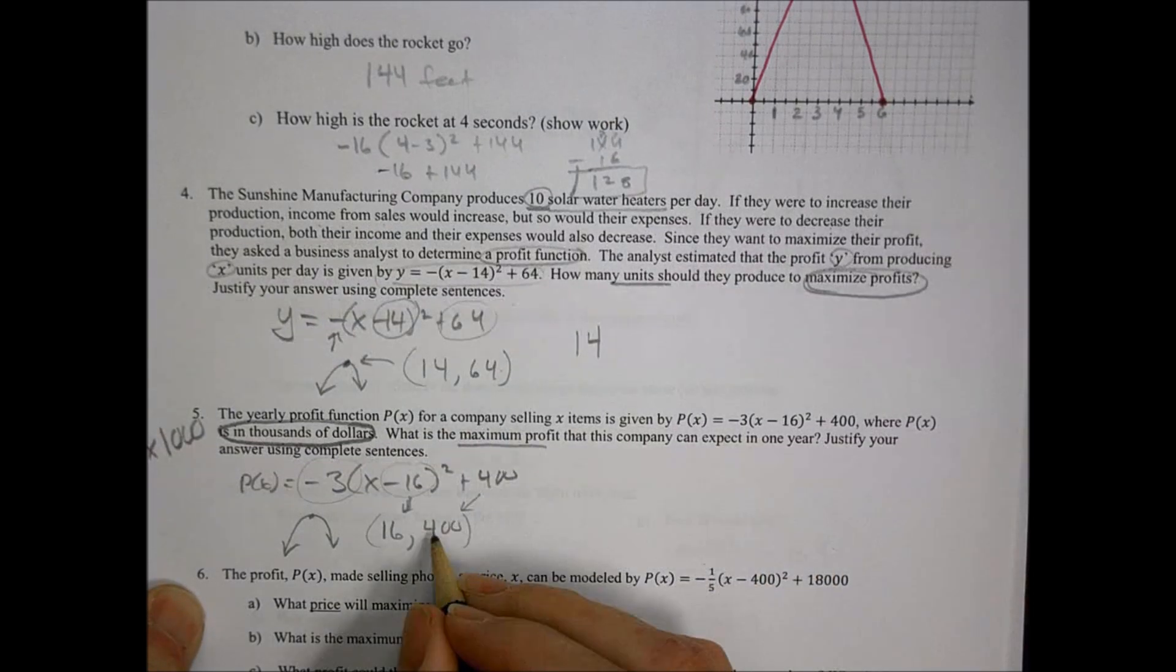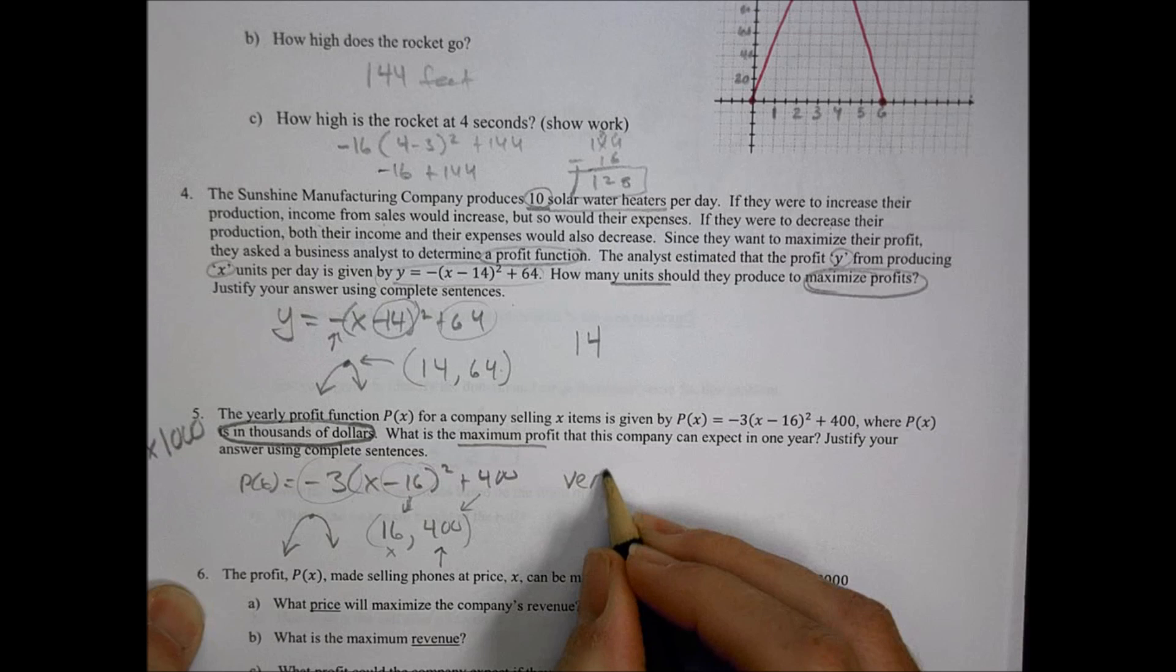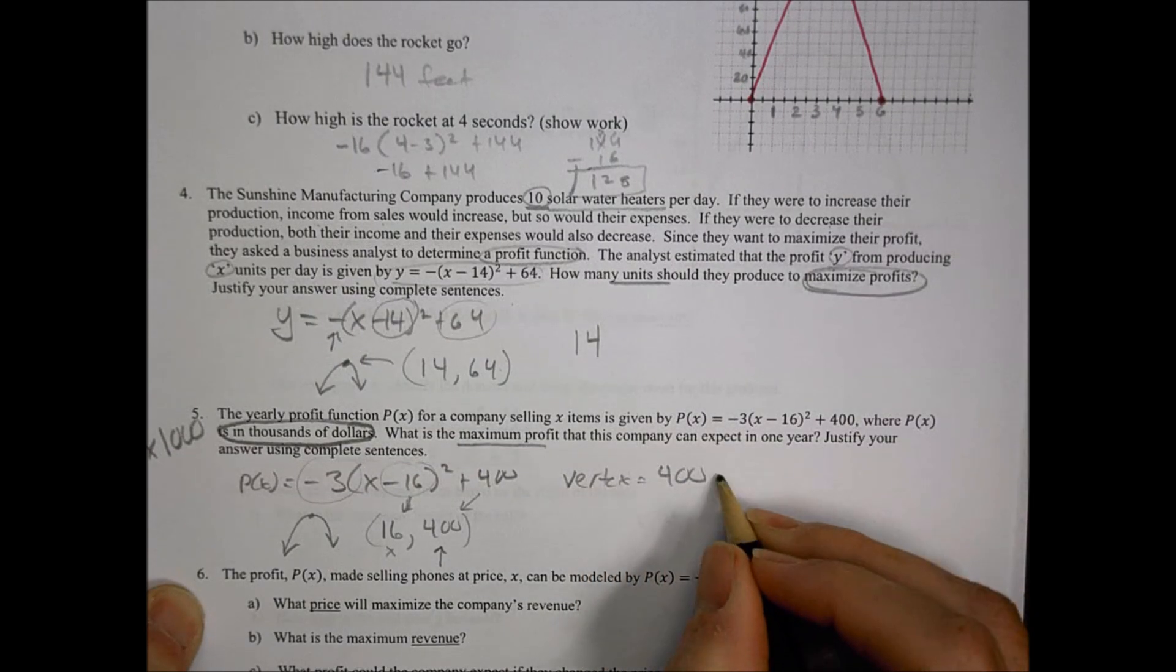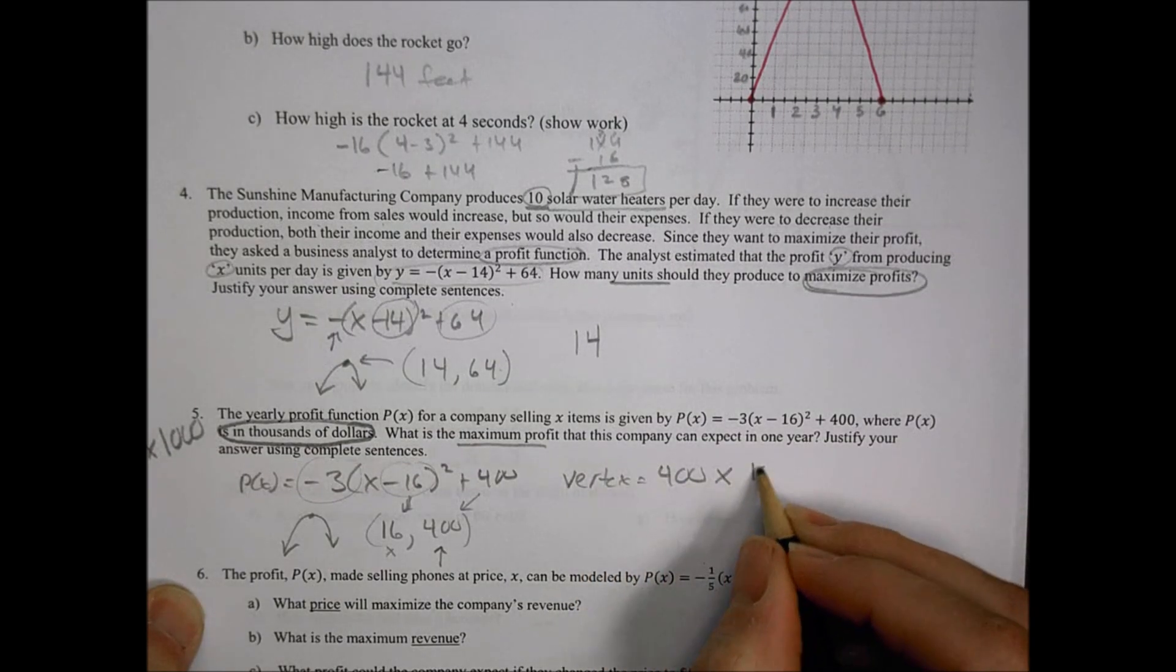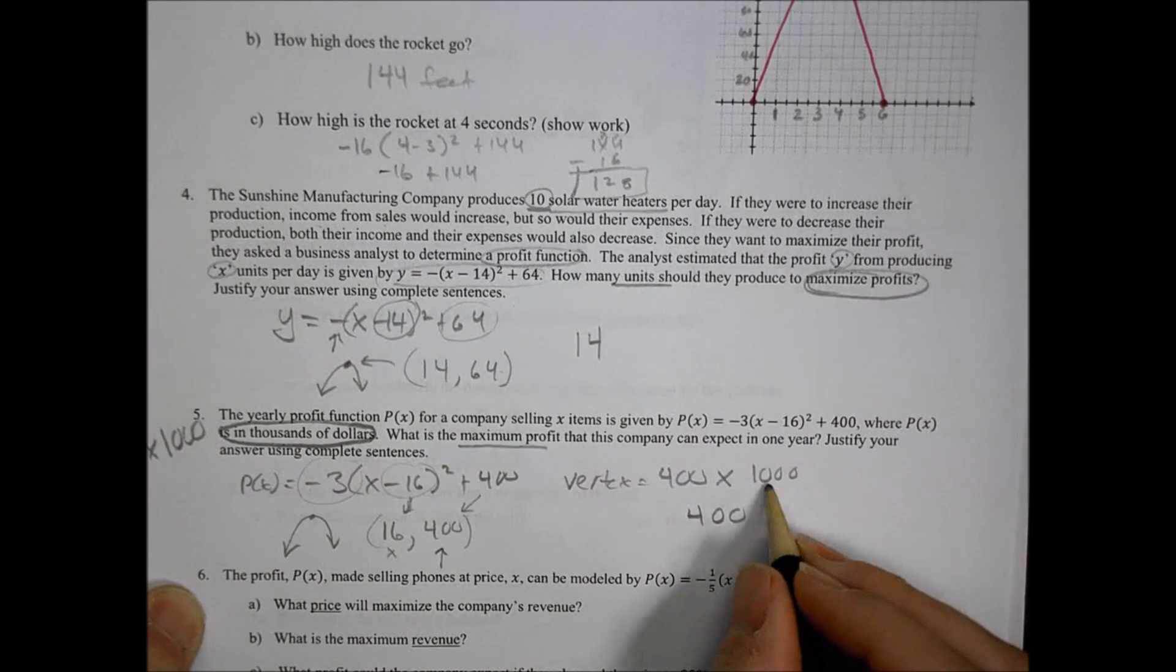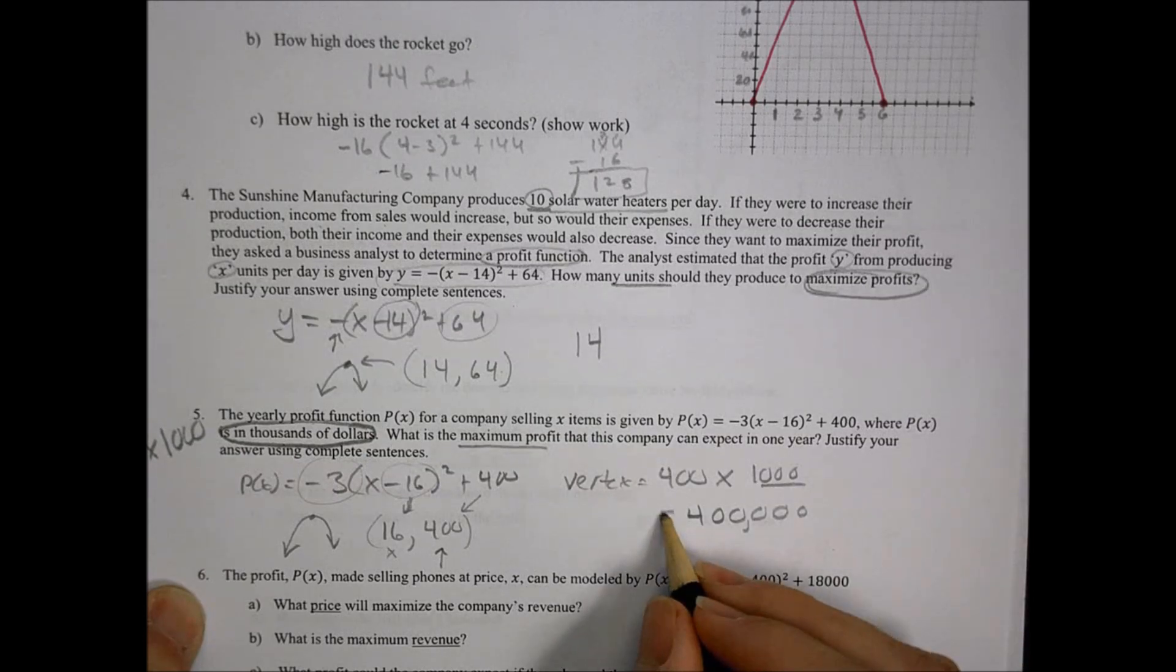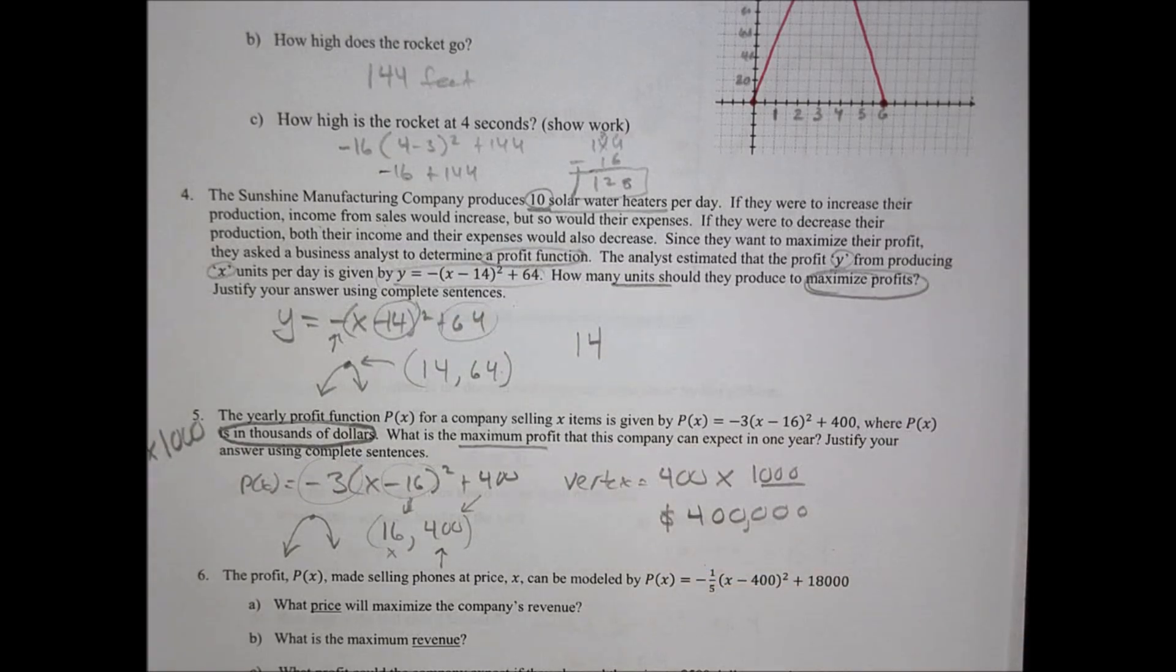What's the maximum profit they can expect in one year? Our maximum is going to be at this point. That's our maximum profit, not the number of items. Profit is the Y value. So based upon the vertex, we're going to be at 400. We have to multiply that by 1,000 because it's in thousands of dollars. When I multiply by 1,000, I add three zeros. So the maximum profit they're going to make would be $400,000 after one year.